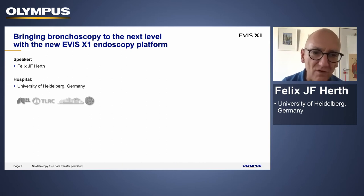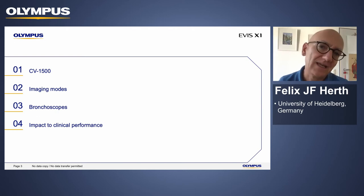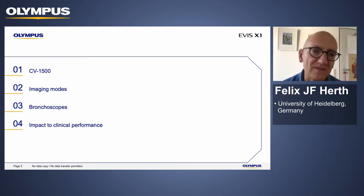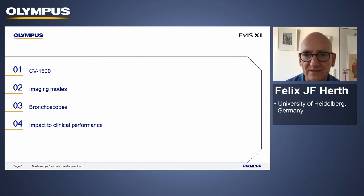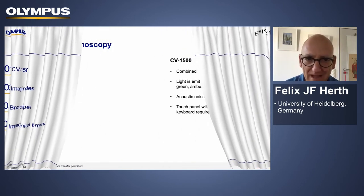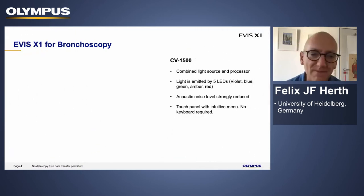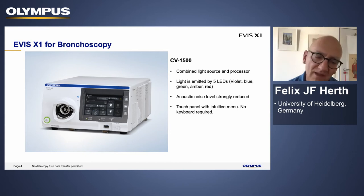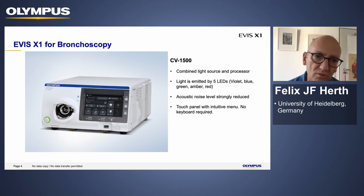It's really a pleasure to show you the next platform you can use to handle your scopes. I will go through the different modalities, show you the next bronchoscopes you can order for the new machine, and give you some insights on why the new platform will help us in our daily practice to increase our yield. So that's the new system — the CV 1500. It's the light source and the processor — everything included in one machine. Like your smartphone, everything is controlled by touch screen, with no need for keyboards anymore.